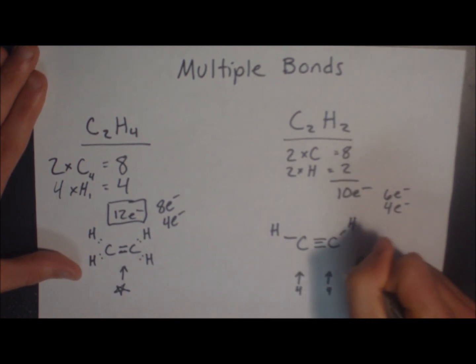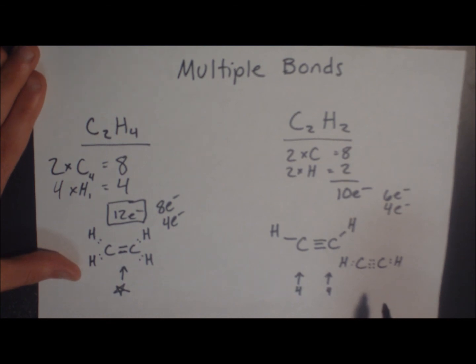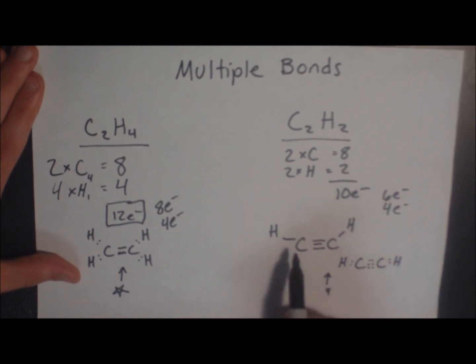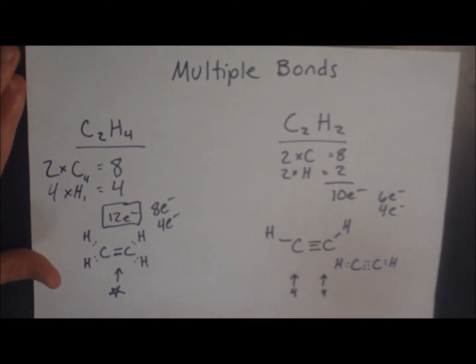And this can also be drawn with the electrons drawn out, which is also called the Lewis dot structure, or just the plain Lewis structure with the solid dash lines, is equally acceptable. These are both the same molecule.